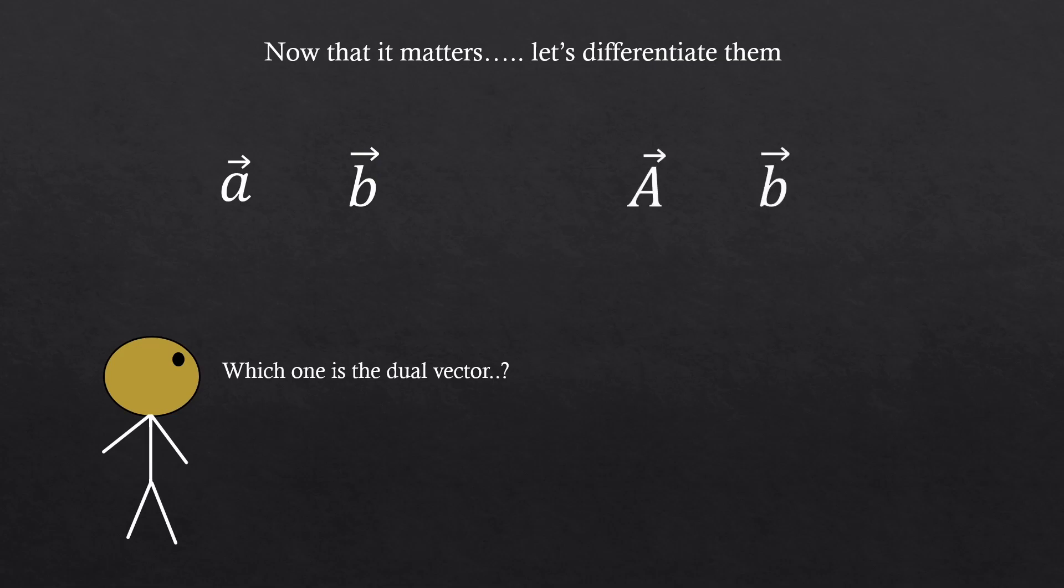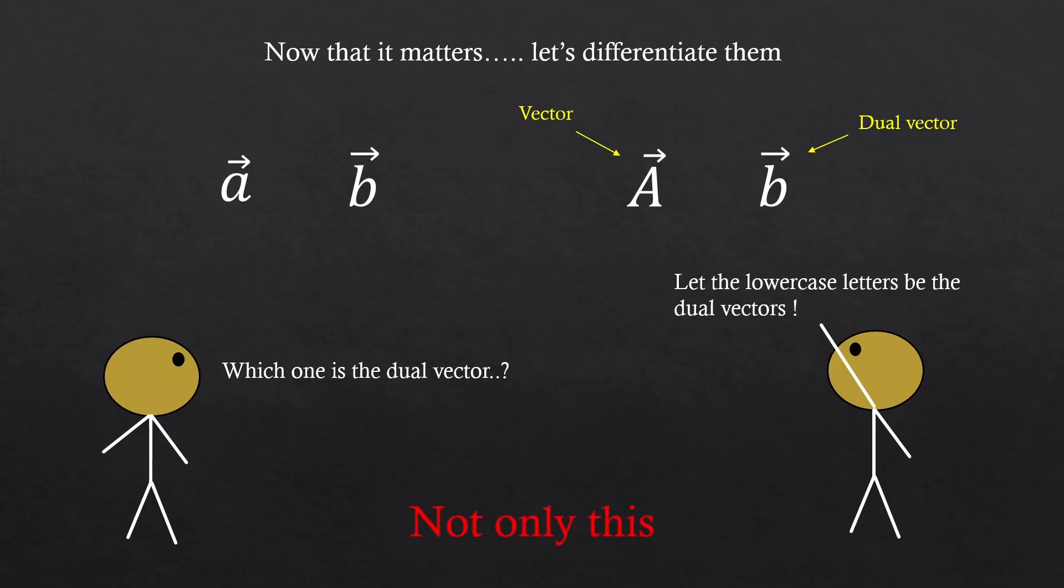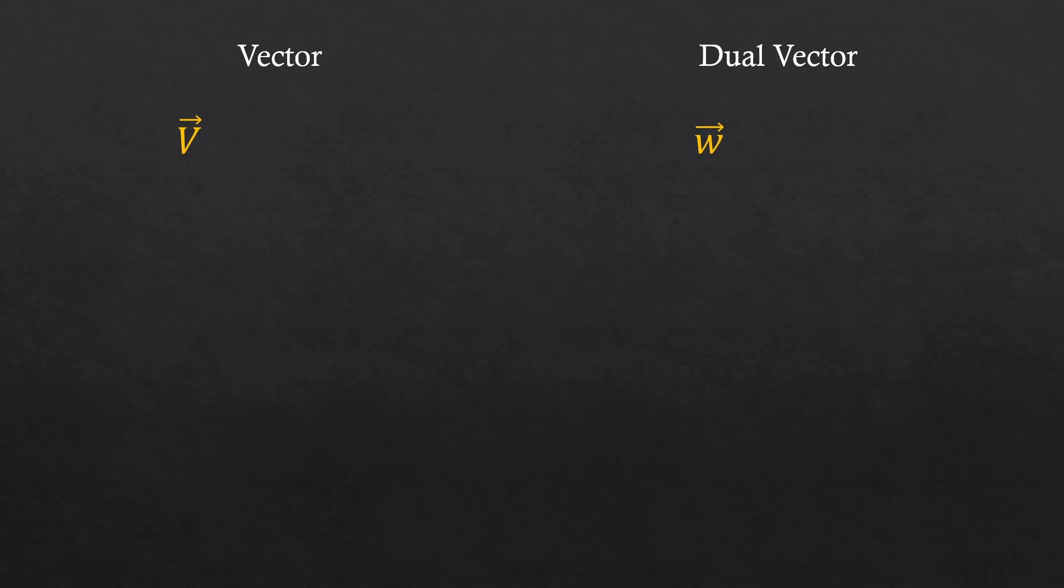We're going to capitalize the vectors and keep the dual vectors as lower cases. But not only this. We used to put an arrow on top of each letter, right? Let's use this now instead.